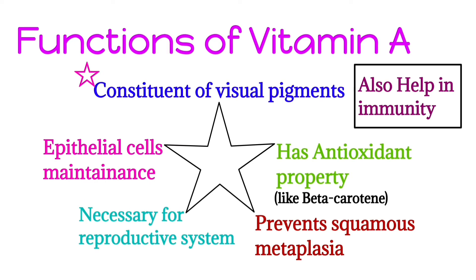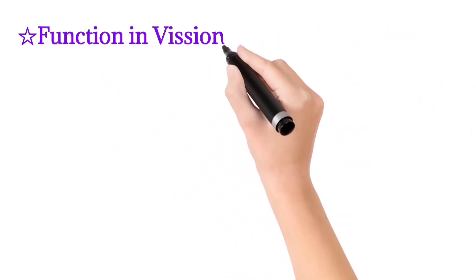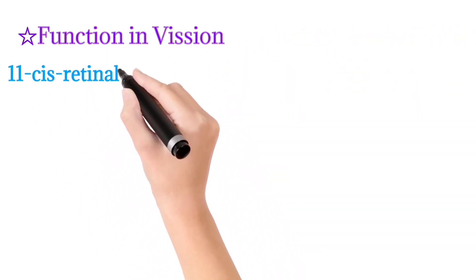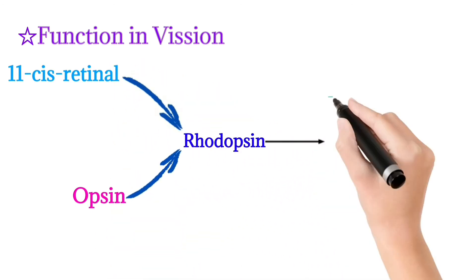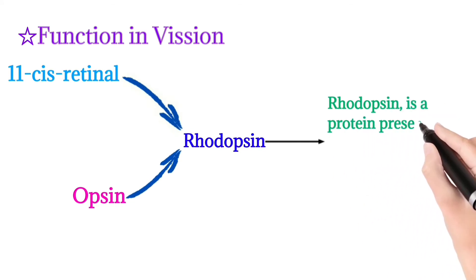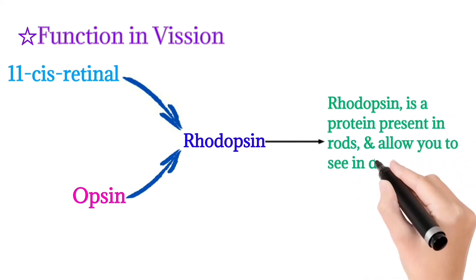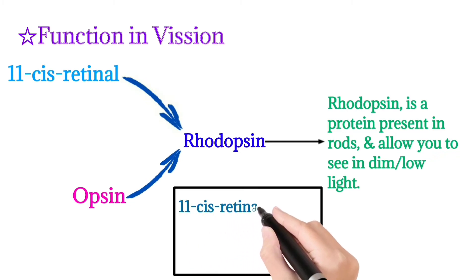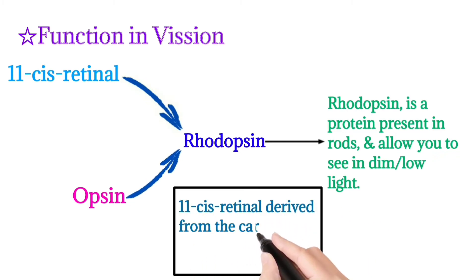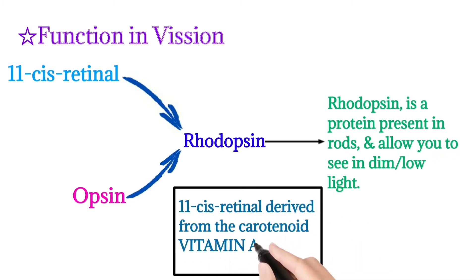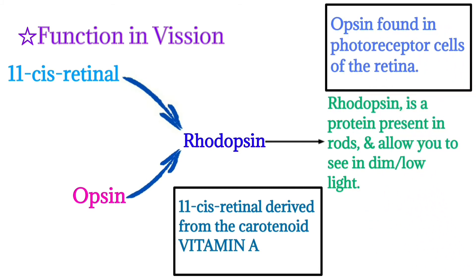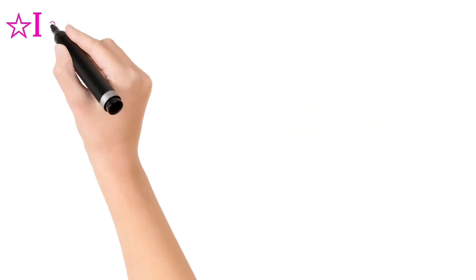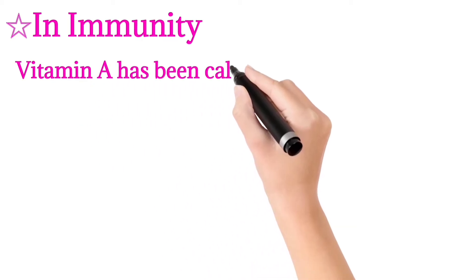Regarding the function in vision: 11-cis retinal and opsin combine to form rhodopsin. Rhodopsin is the protein present in rods and allows you to see in dim light. 11-cis retinal is derived from carotenoid Vitamin A, and opsin is found in the photoreceptor cells of the retina.